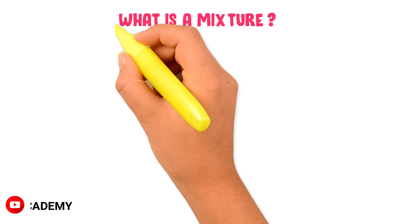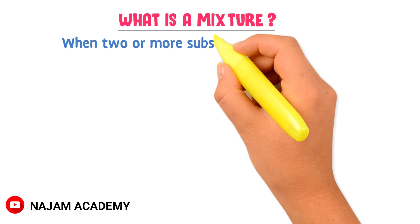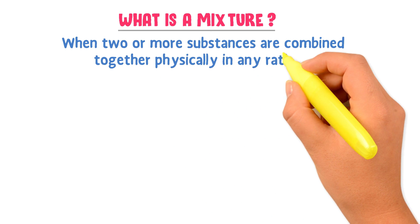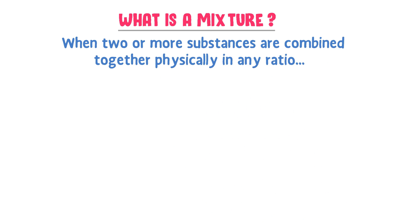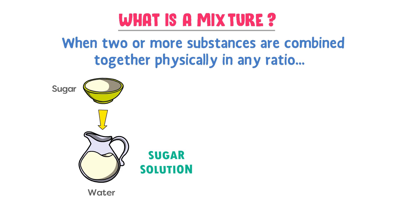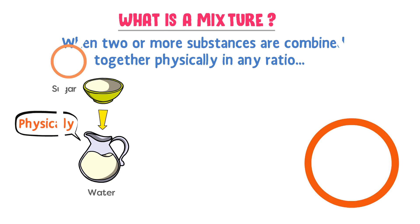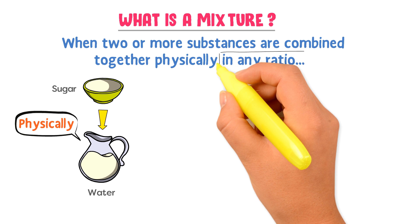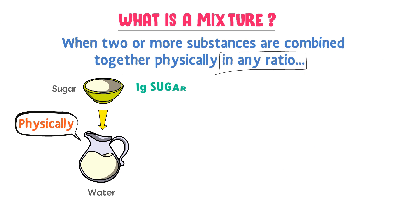Let me teach you what is a mixture. When two or more substances are combined together physically and in any ratio, it is called a mixture. For example, when you dissolve some sugar in the water, you get a sugar solution. It is a mixture because sugar and water are combined together physically. 'Any ratio' means that if you add 1 gram or 10 grams of sugar in the water, you still get a mixture.